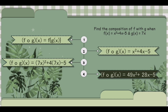We multiply 7x by itself so it would become 49x squared, and distribute 4 to 7x so it would become 28x, and just copy minus 5. So it would become 49x squared plus 28x minus 5. We have our answer.